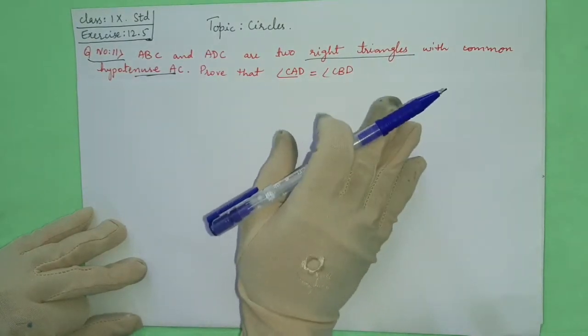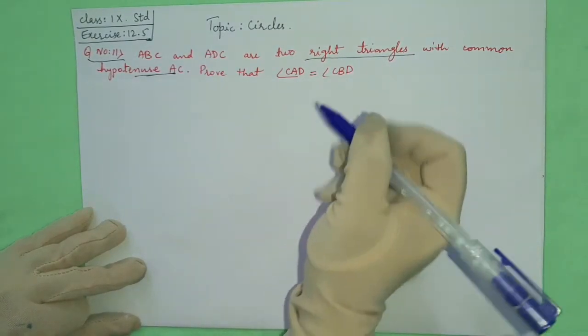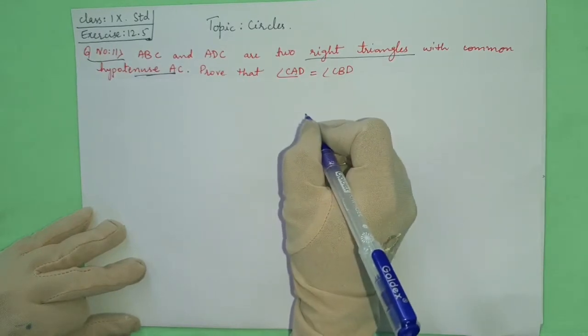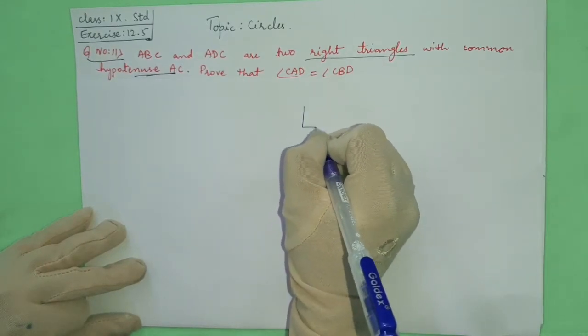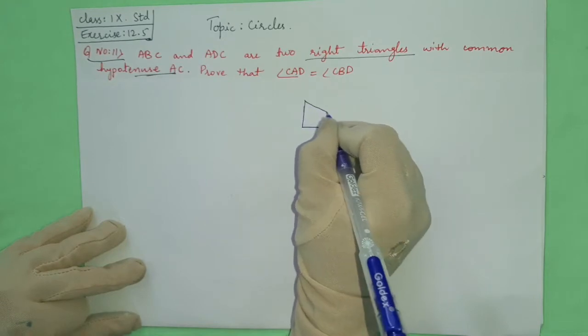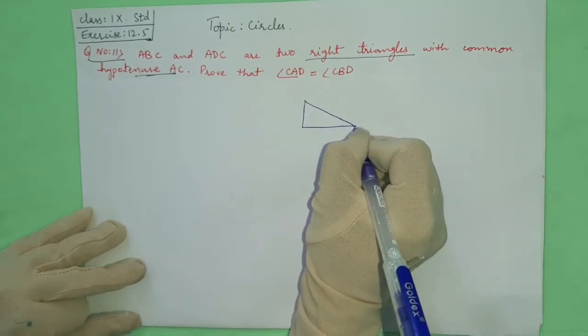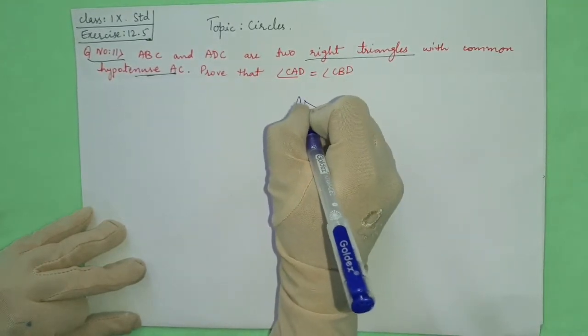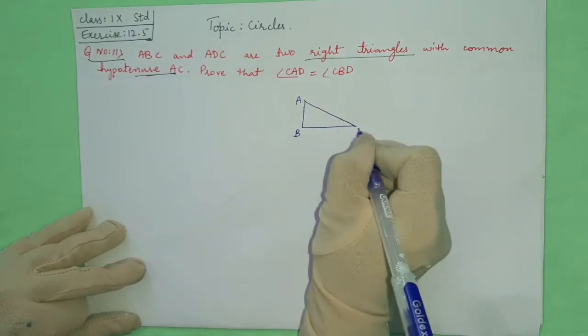Let us see here, a figure is not given. So first of all we will draw the figure here. AC is the common hypotenuse. You will see here like this: A, B, C.